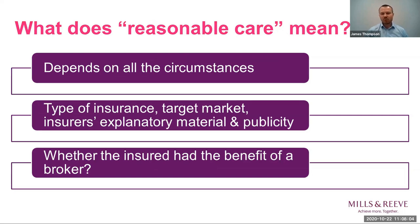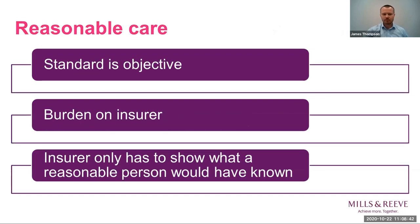Let's have a look at what the term 'reasonable care' actually means. The Act is very helpful on this — it depends on all the circumstances of the case. The Act provides examples of relevant circumstances: the type of insurance, the target markets the insurer is working within, the insurer's explanatory material and publicity material, and whether the insured had the benefit of a broker to assist them. The standard is objective, the burden is on the insurer, and the insurer only has to show what a reasonable person would have known — not what the particular consumer actually did know.